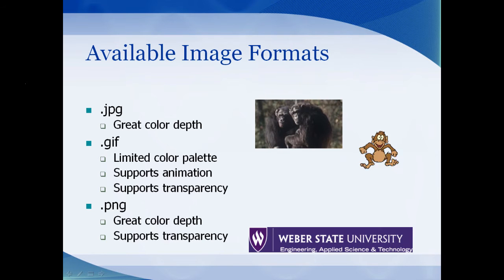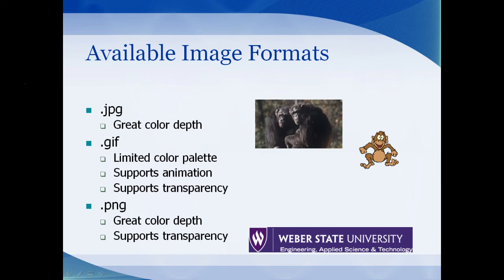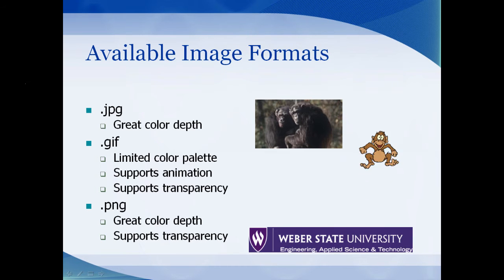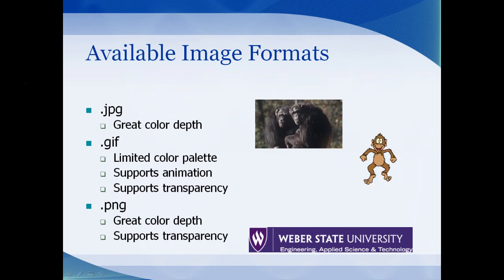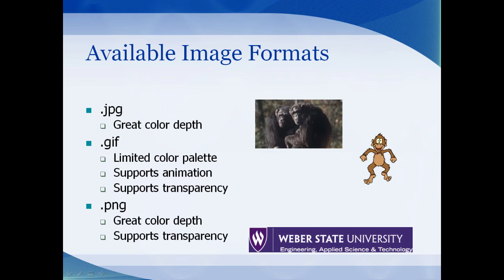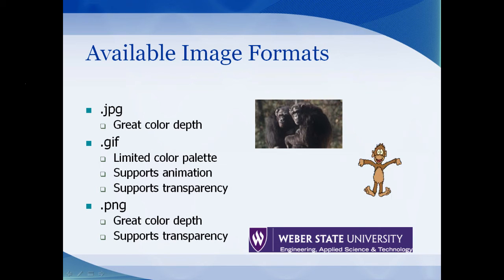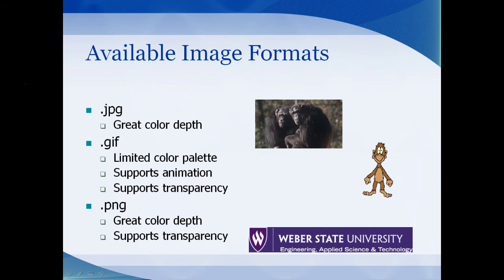First of all, let's talk about the available image formats. You have a JPEG, which can go on a web page and has a greater color depth than some of the others — as you can see comparing the chimpanzee picture to the little monkey jumping up and down. The little monkey is a GIF, and yes, GIFs support animation. They do have a limited color palette, but they do support transparency. A PNG file — or 'ping,' I'm not sure how people pronounce that — has great color depth like a JPEG and also supports transparency, so PNGs are often used for logos and things like that on a web page.